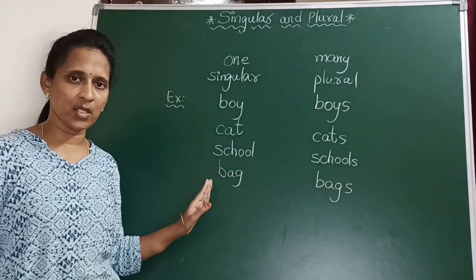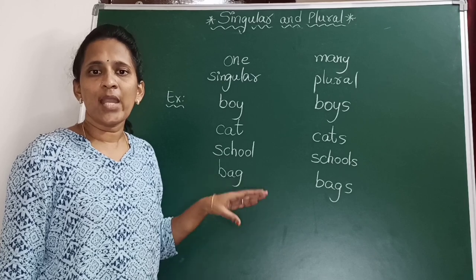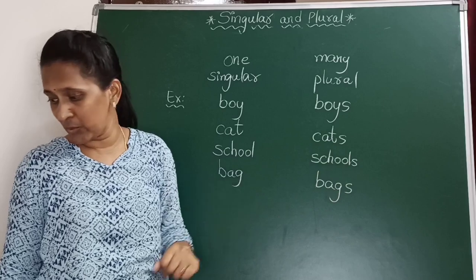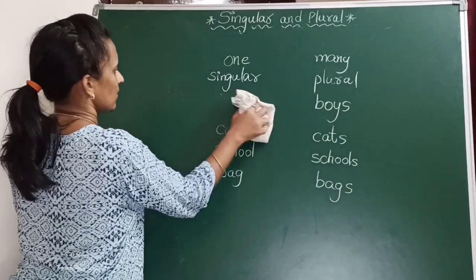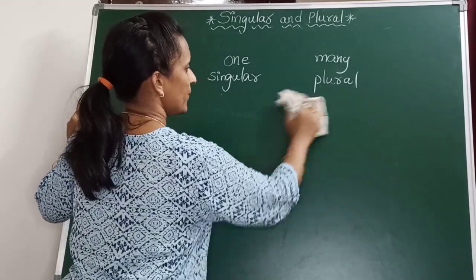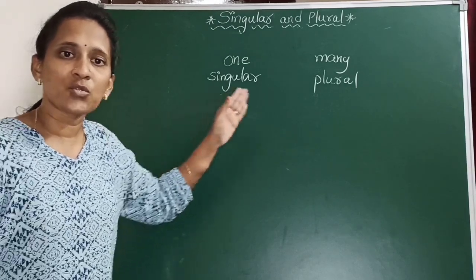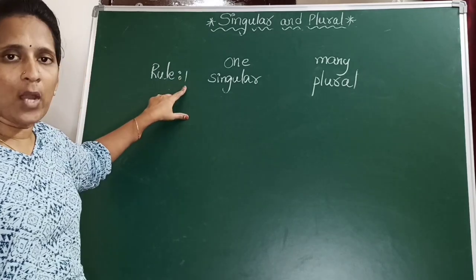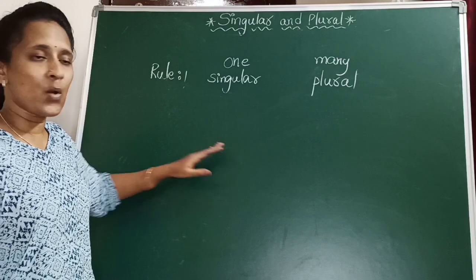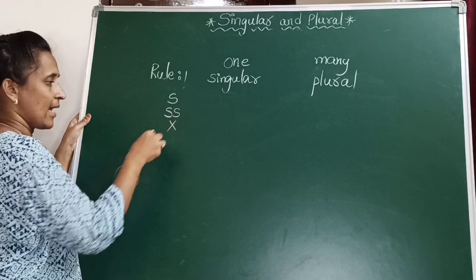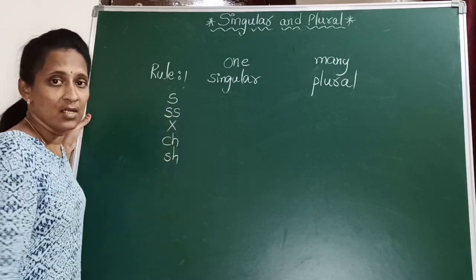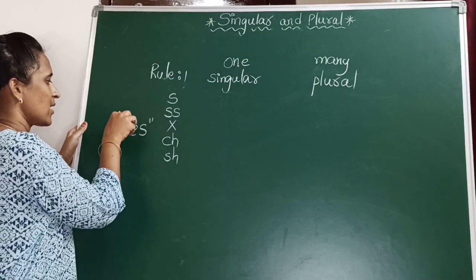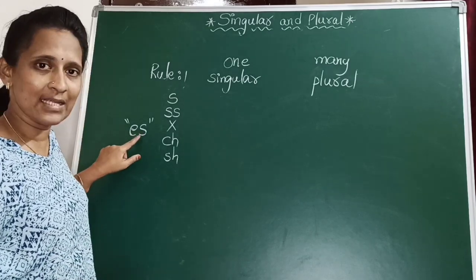We are adding only S to change the singular noun to the plural noun. But here, we have some certain rules in this topic where we need to add not only S — we need to add some other letters to make it plural. If you follow those rules, children, it will be easy for you to remember. For example, rule number 1. In this rule, you have to see where the singular noun is ending with S, SS, X, CH, and SH. If the nouns are ending with these letters, you should add ES to make that noun plural.